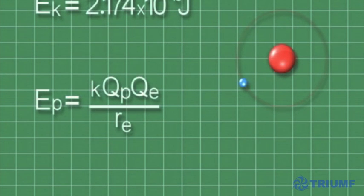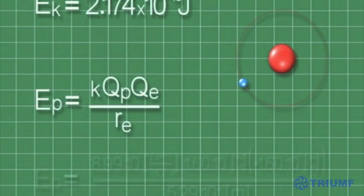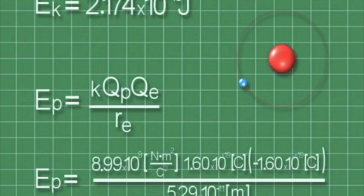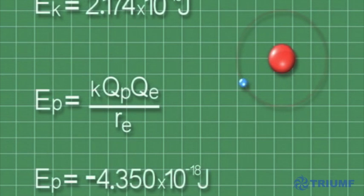Now let's calculate the potential energy by plugging in the known values of the electron and proton's charges, and the radius of the electron. We discover that the potential energy is negative.